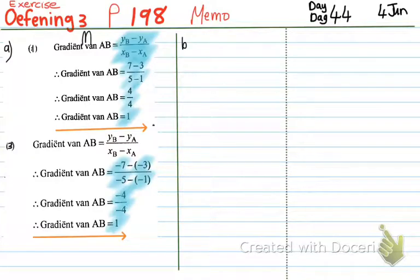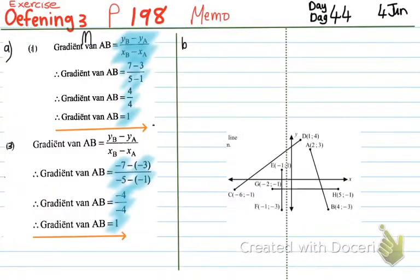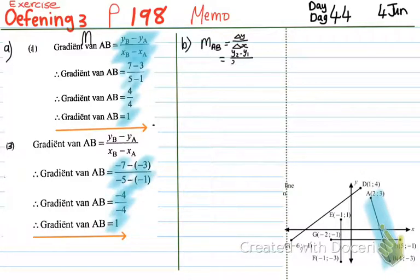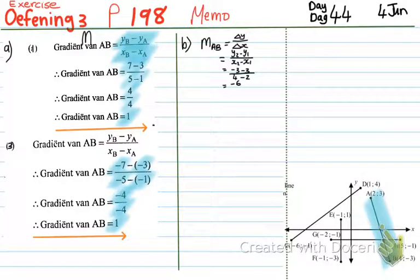Then number B. I'm quickly going to put the sketch in here so that we have the questions. By number B they give us a diagram and say to calculate the gradients of the line segments. First we're going to do the gradient of AB: delta Y over delta X, which is Y2 minus Y1 over X2 minus X1. Using the Y value of B which is negative 3, minus 3, over the X value of B minus the X value of A: 4 minus 2. Negative 3 minus 3 gives me negative 6, and 4 minus 2 is 2, so negative 6 divided by 2 is negative 3.